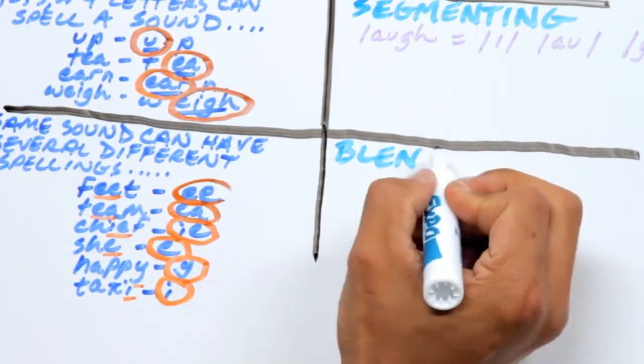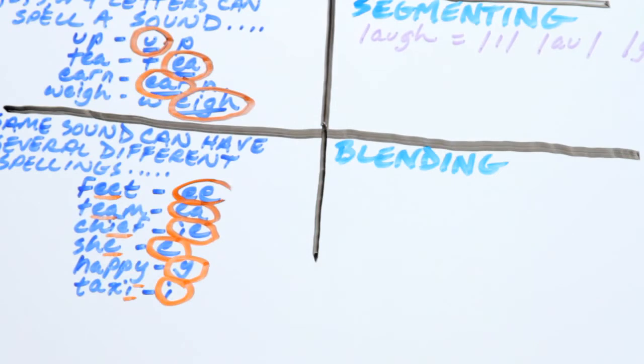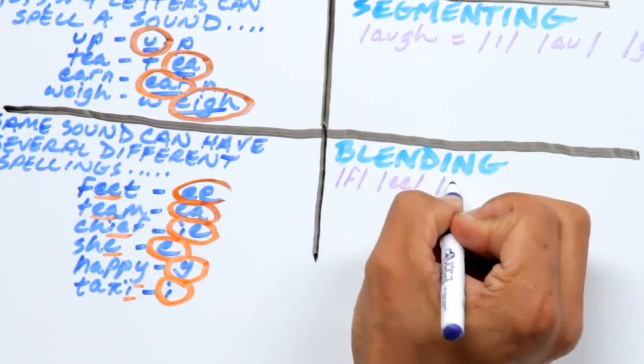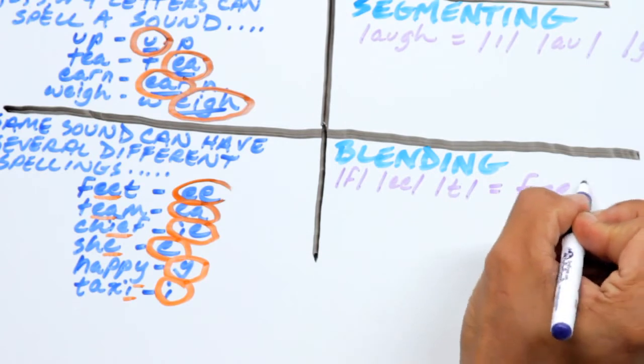The second skill is blending, which is the ability to push sounds together to make a word. For example, the sounds f, e, t make up the word feet.